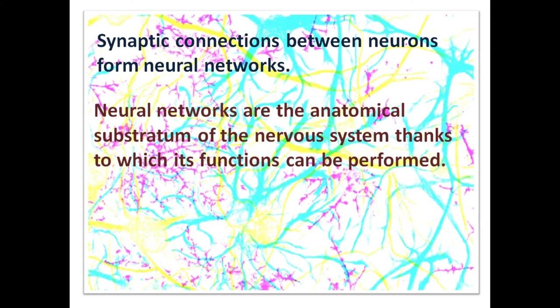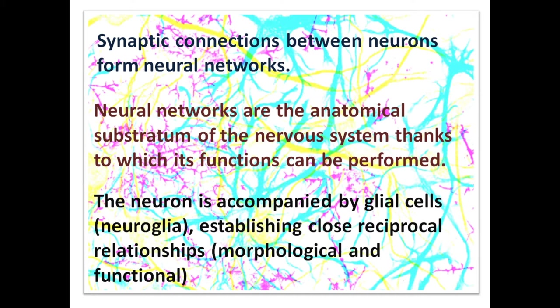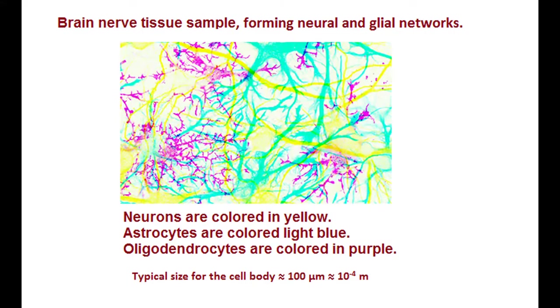The neuron is accompanied by glial cells — neuroglia — establishing close reciprocal relationships, morphological and functional, in brain nerve tissue, forming neural and glial networks.